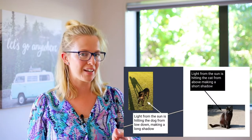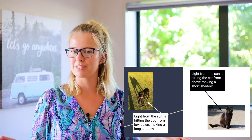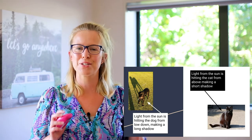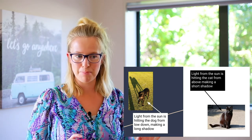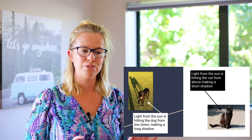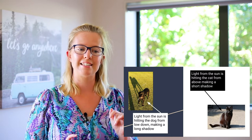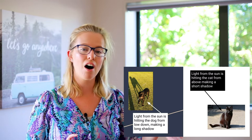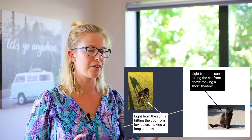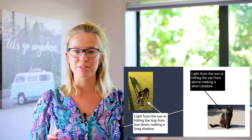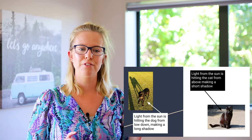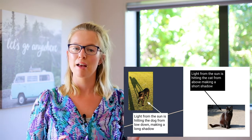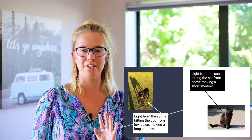Here are two pictures that show some examples. I'm using animals because I love them so much. If you look at the picture of the dog, the light source from the sun is hitting the dog from down low, making him have a long shadow. And as you can see with this cute little kitty, the light from the sun is hitting the cat from above, making her have a short shadow.